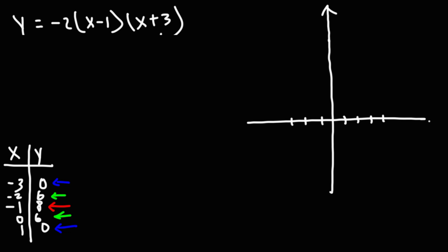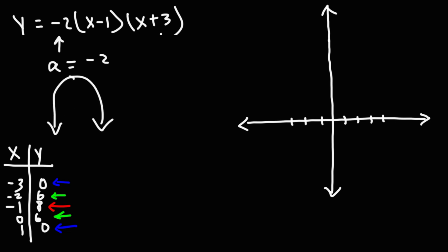Now that we have 5 points centered around the vertex, let's go ahead and plot it. I'll need to stretch the graph a bit higher since the highest point is 8. Because a is negative 2 — a negative number — this parabola is going to open downward, and instead of a minimum value, it will have a maximum value, which is the vertex. We have negative 3 comma 0, 1 comma 0, the vertex at negative 1 comma 8, the point negative 2 comma 6, and the y-intercept at 0 comma 6.